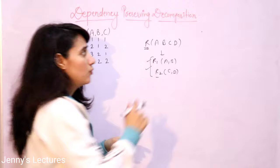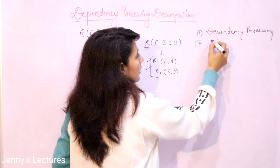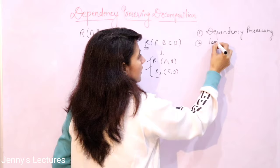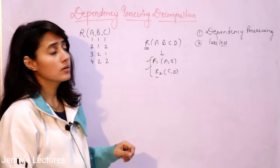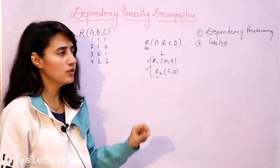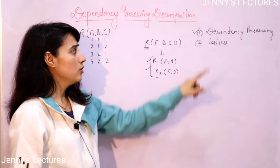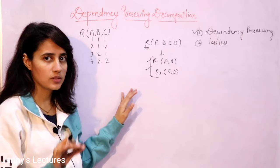The first property is the dependency preserving property, and the second is lossless. The decomposition should be dependency preserving and lossless. In this video, I'll discuss about dependency preserving decomposition. In the next video, we'll discuss lossless decomposition. With the help of an example, I'm going to discuss this.